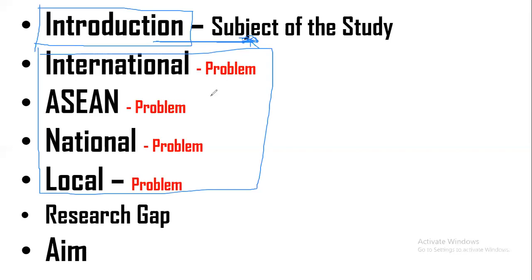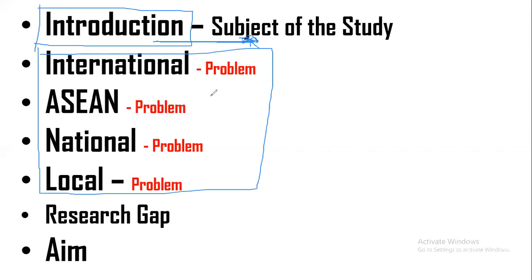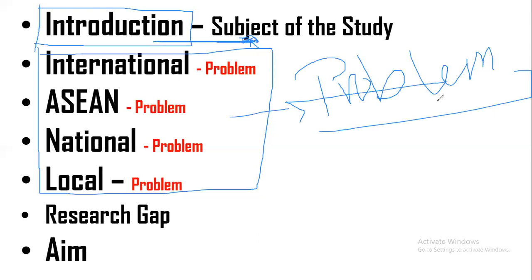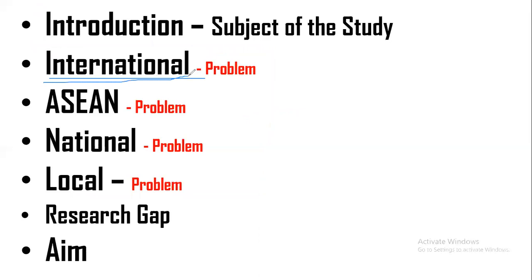Now let's go over the international, ASEAN, and local problem section. Here, all you have to do is cite an actual problem — and this problem should really be justified. You have to justify why it is a problem. Internationally, you have to look for a problem that exists in another country, like Australia, for example. Let's say students are sleeping in class.